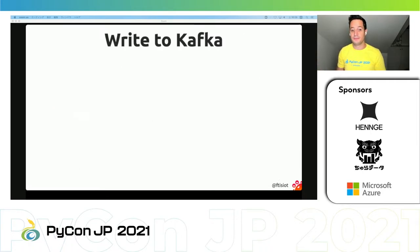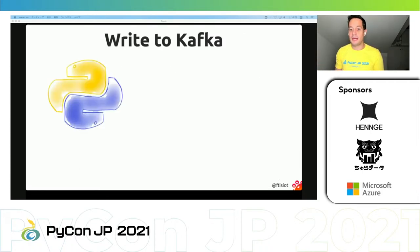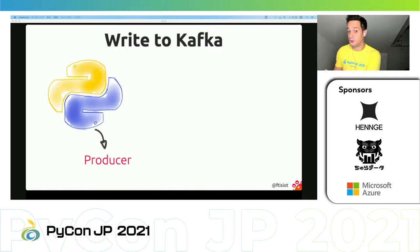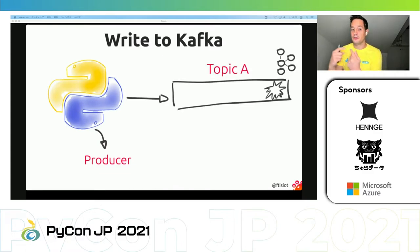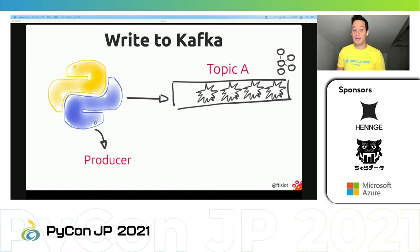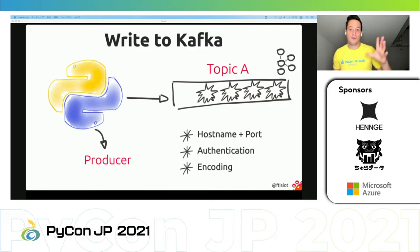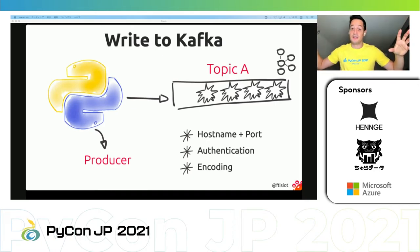We will have a Python application that is a producer — it produces data to a topic. In order to produce data to a topic, all the application needs to know is: where to find Kafka (host name and port of the brokers), how to authenticate, and how to encode the information from JSON to the raw series of bytes that Kafka understands.